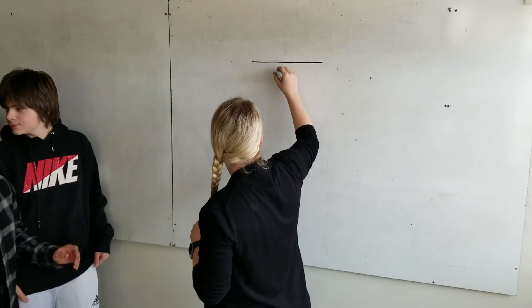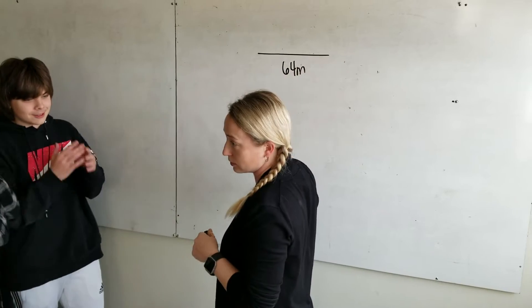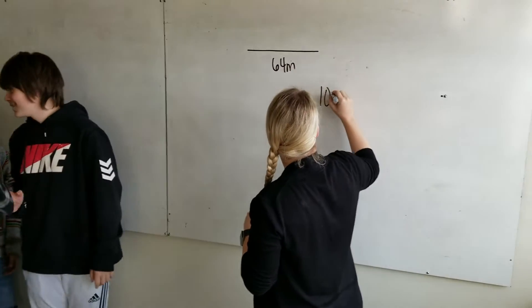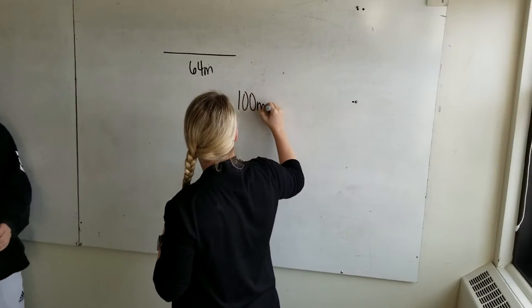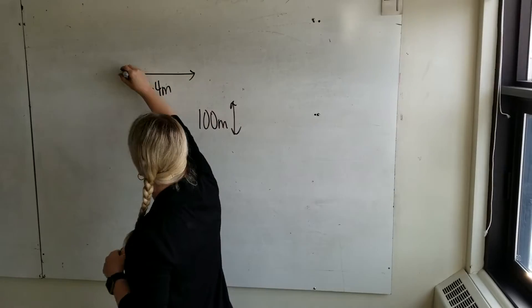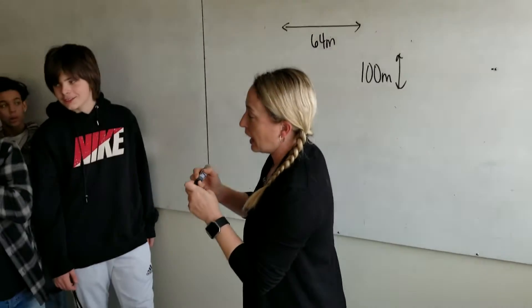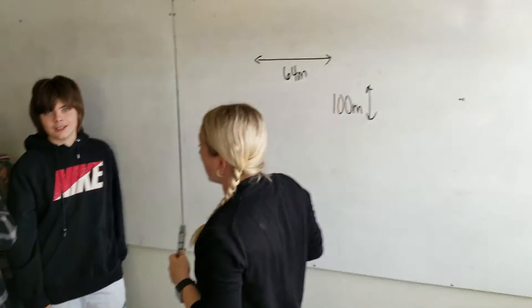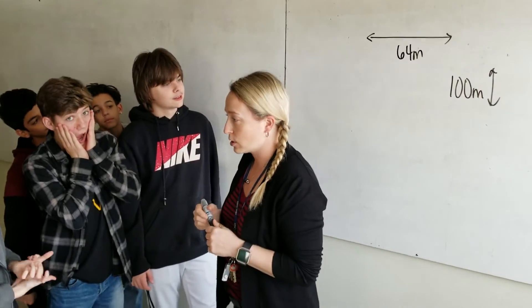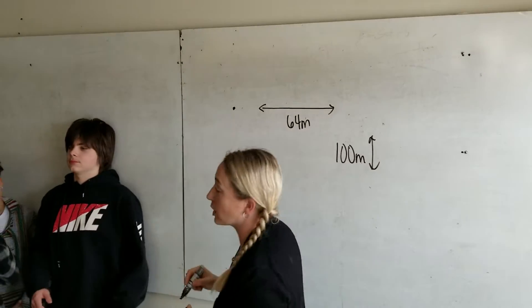It is 64 meters by 100 meters. That's a lot. And you've got a player in one corner of the soccer field.